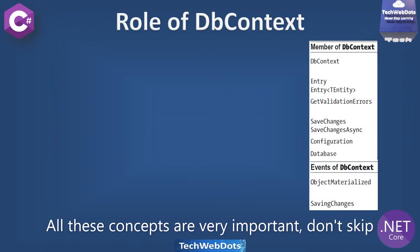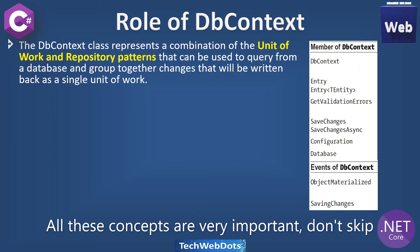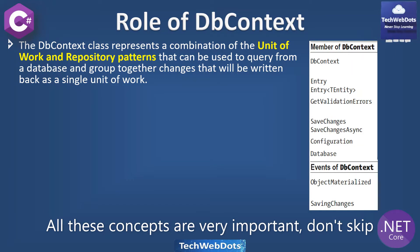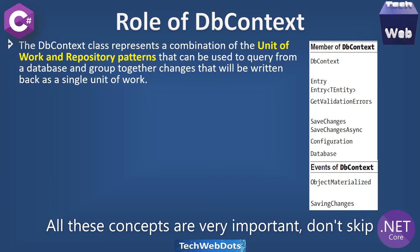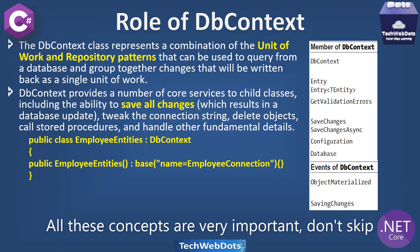Now we'll talk about the role of DbContext. The DbContext class represents a combination of the Unit of Work and Repository patterns. If you are not familiar with these two patterns, I'll leave a link you can follow. The Unit of Work and Repository patterns can be used to query a database and group together changes that will be written back as a single unit of work.